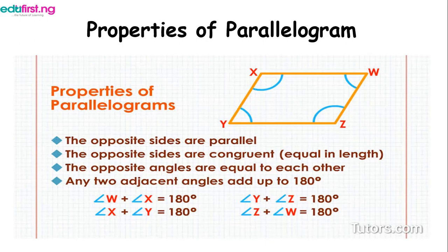Let's look at the properties of parallelograms. We have four properties. The first one is the opposite sides are parallel — line XW is parallel to line YZ, and line XY is parallel to line WZ. The second property is that the opposite sides are congruent, meaning they are equal in length.